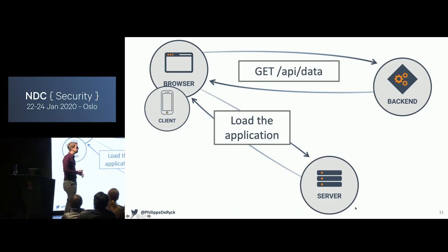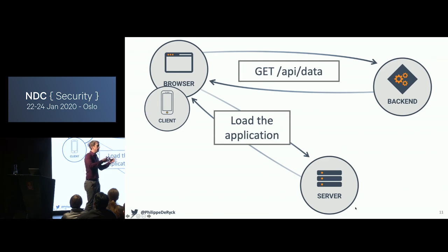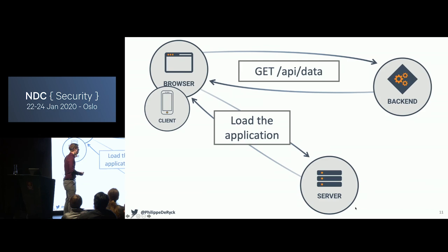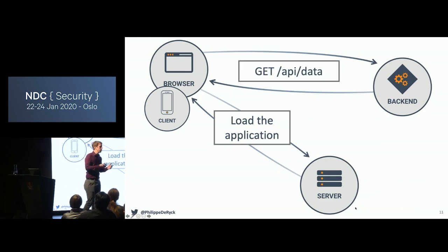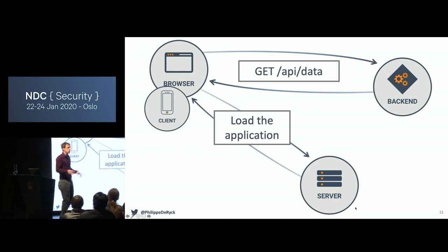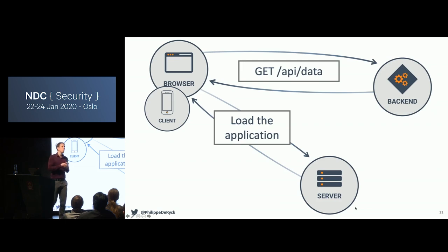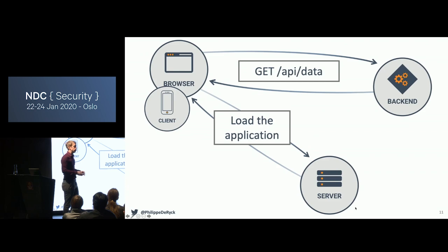This slide is actually a very good illustration of some of the first problems you might encounter — people thinking that the client can handle certain security responsibilities. Some things move to the client, but never any authorization-based security decisions. The client lives outside of your trust boundary, you have no control over the client, and the attacker can open up the client and make it do whatever they want. You have to assume that the client is untrusted, always.